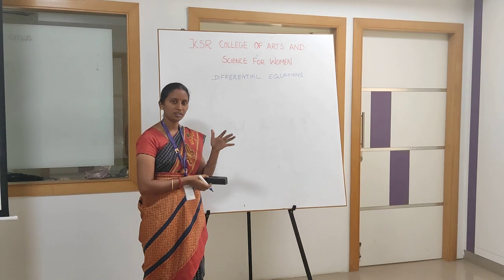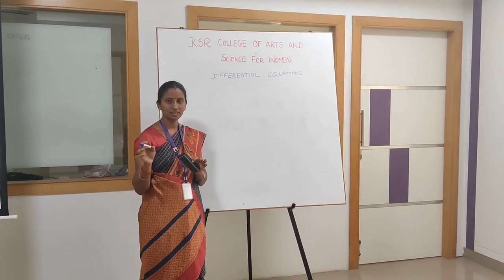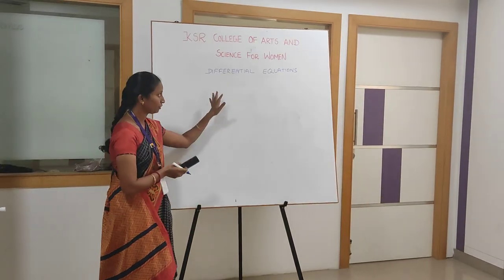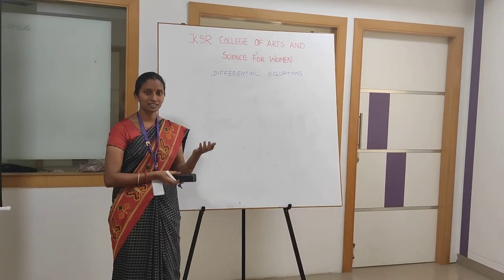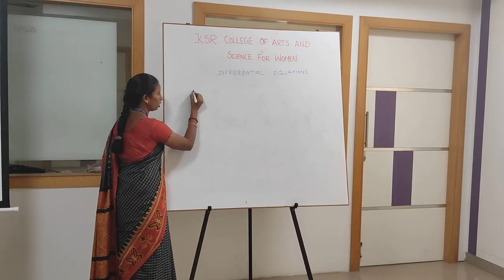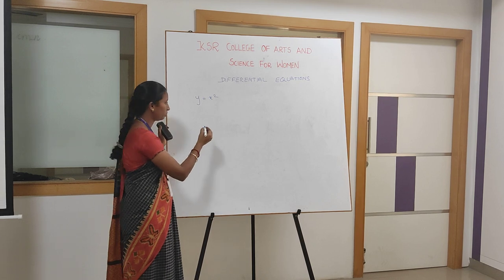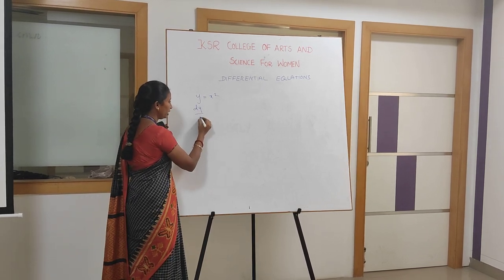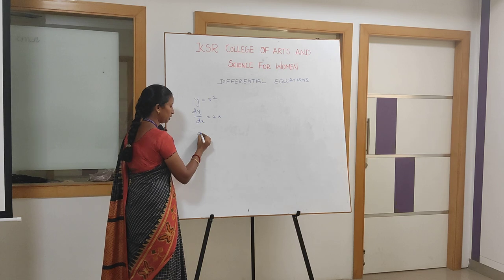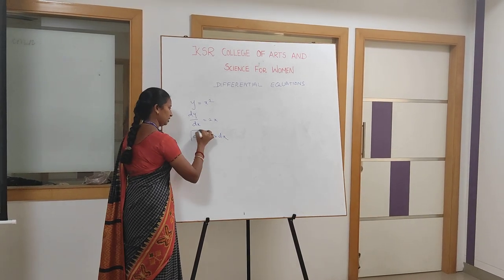This is a Differential Equation — it is an easy subject. Basically, this is a formula: y is equal to x squared. So this is a reference shape. dy by dx is equal to 2x. So dy is equal to 2x into dx. This is the answer.